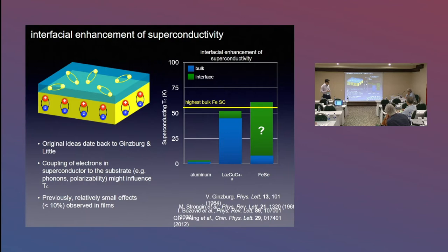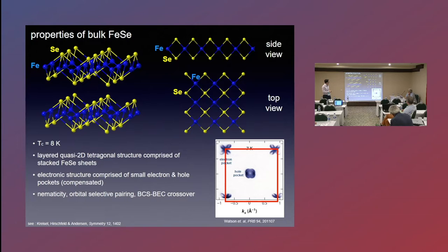As a very quick introduction into bulk iron selenide, it's obviously a member of the iron-based superconductors. Structurally the simplest, comprised of just iron selenide sheets with nothing in between. These are tetragonal. TC is relatively low, about eight Kelvin in bulk.